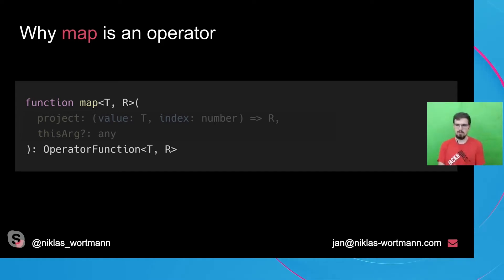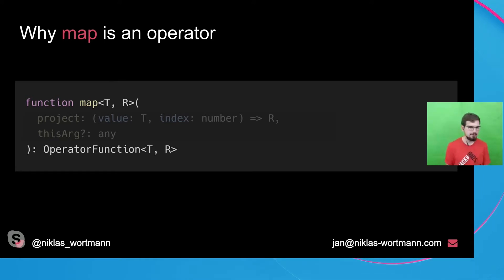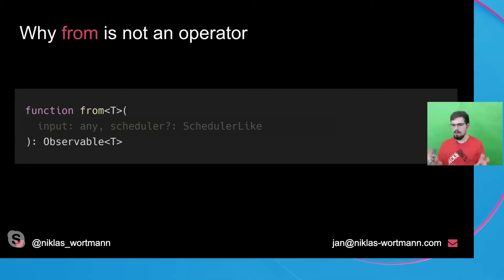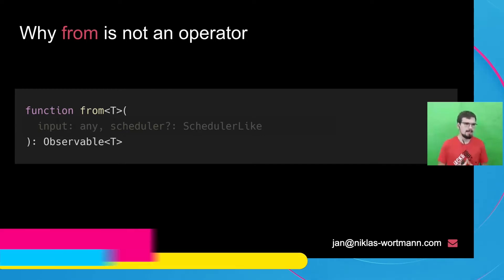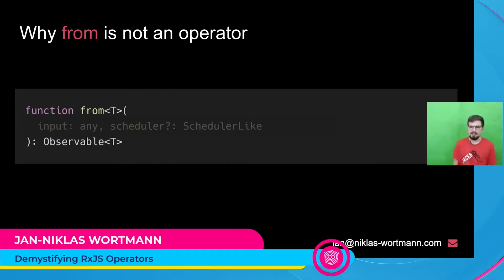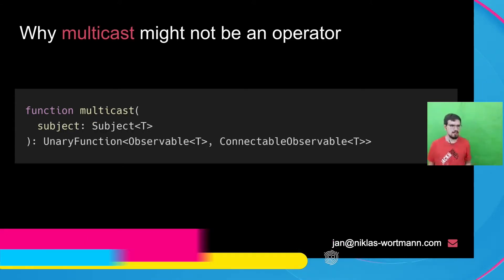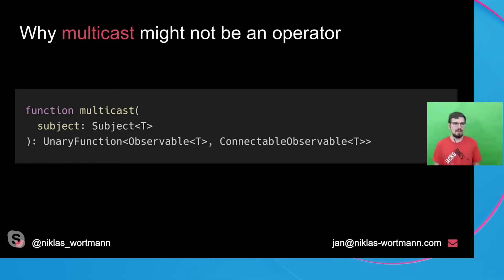So let's talk about operators versus non-operators. One of the most well-known operators is map. What map does is take the source observable, apply a projection function to every value coming through, and return that newly generated value, emitted in a new observable. From is a function we use regularly, but it's not an operator — from creates an observable, but it's not operating on an already existing observable, so it's not adding behavior to one.